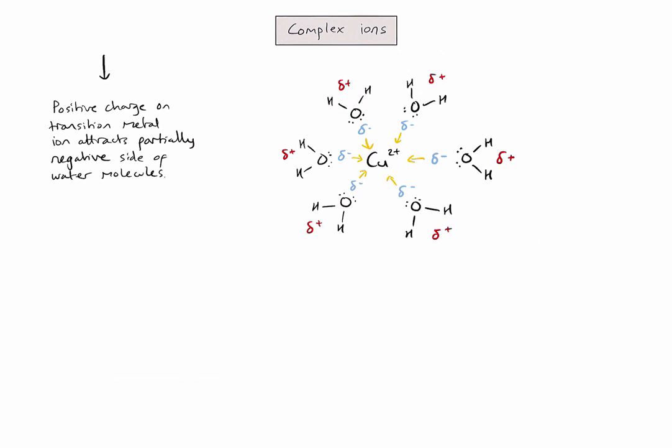And there's a reason I've only drawn six water molecules. And that is simply because there's only enough space around my copper 2-plus ion for six water molecules to get close. Because that central transition metal ion has a strong positive charge, it pulls the oxygen atoms close enough that they can actually use one of their lone pairs of electrons to form a coordinate bond with an empty orbital on my transition metal ion.